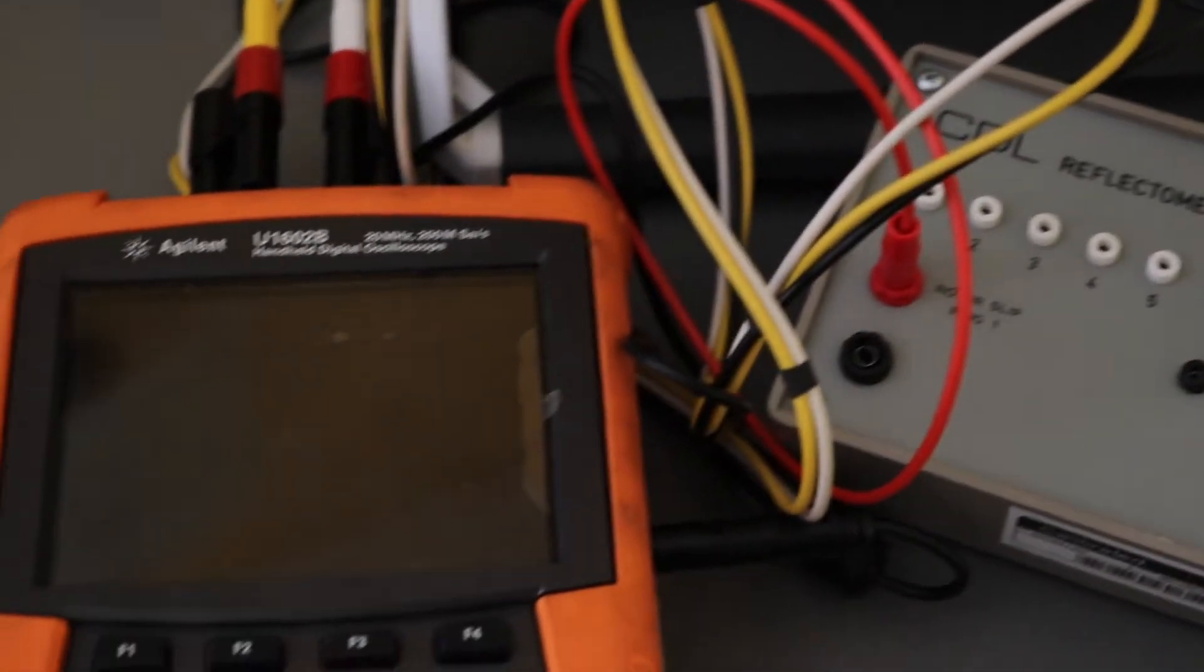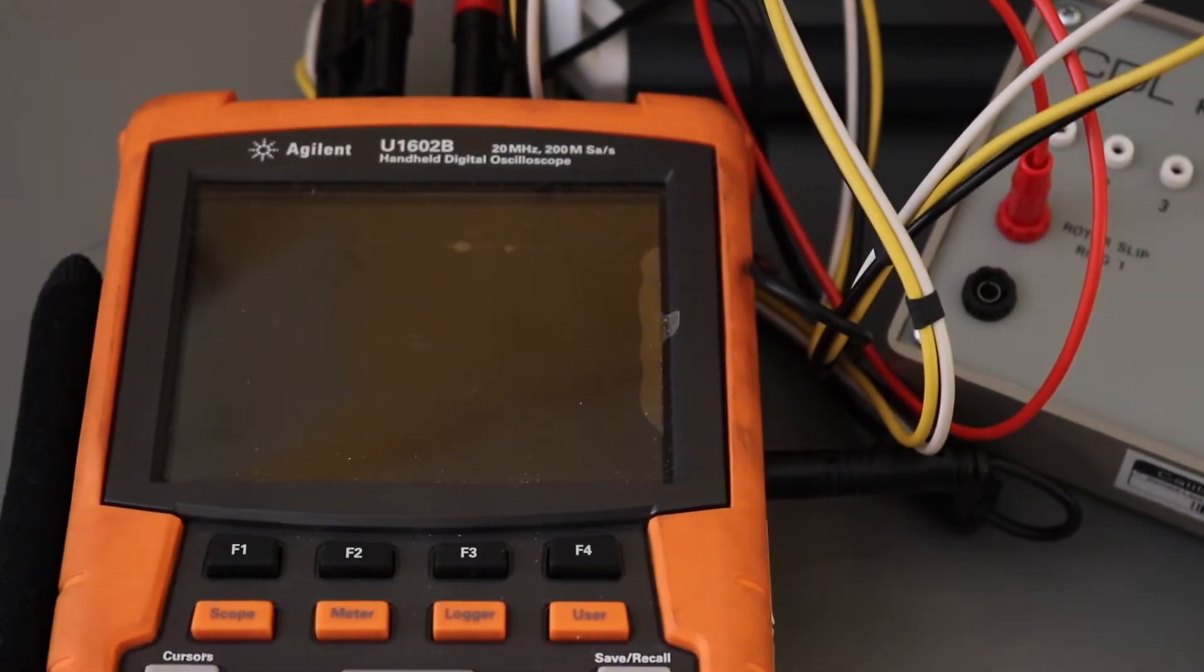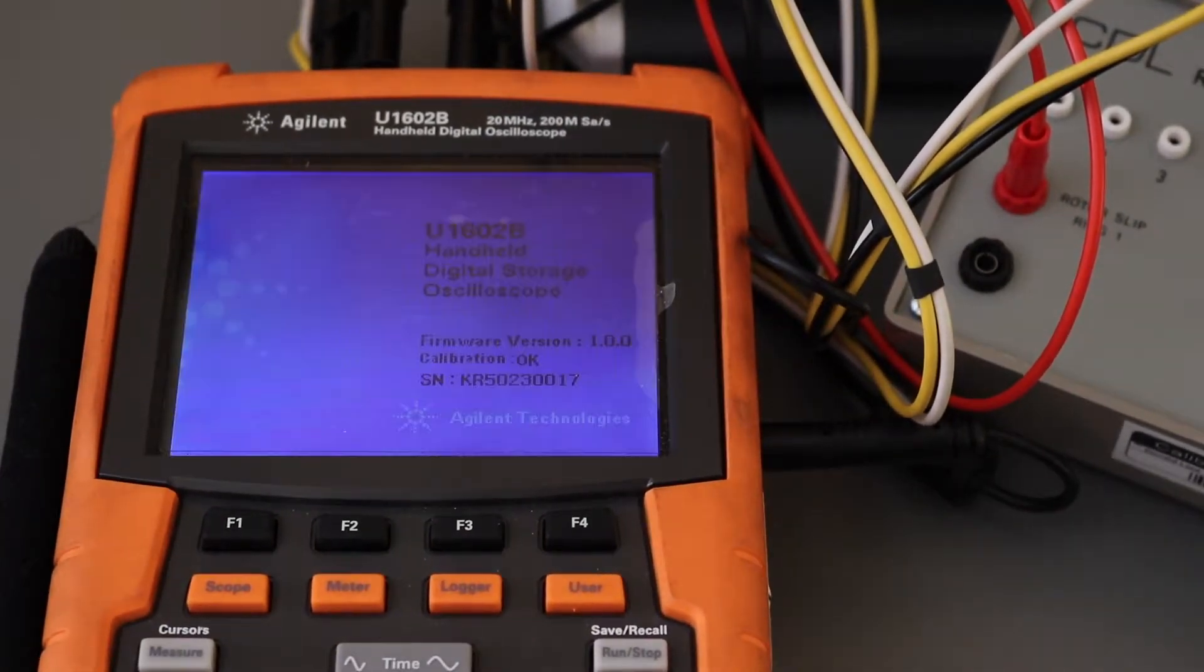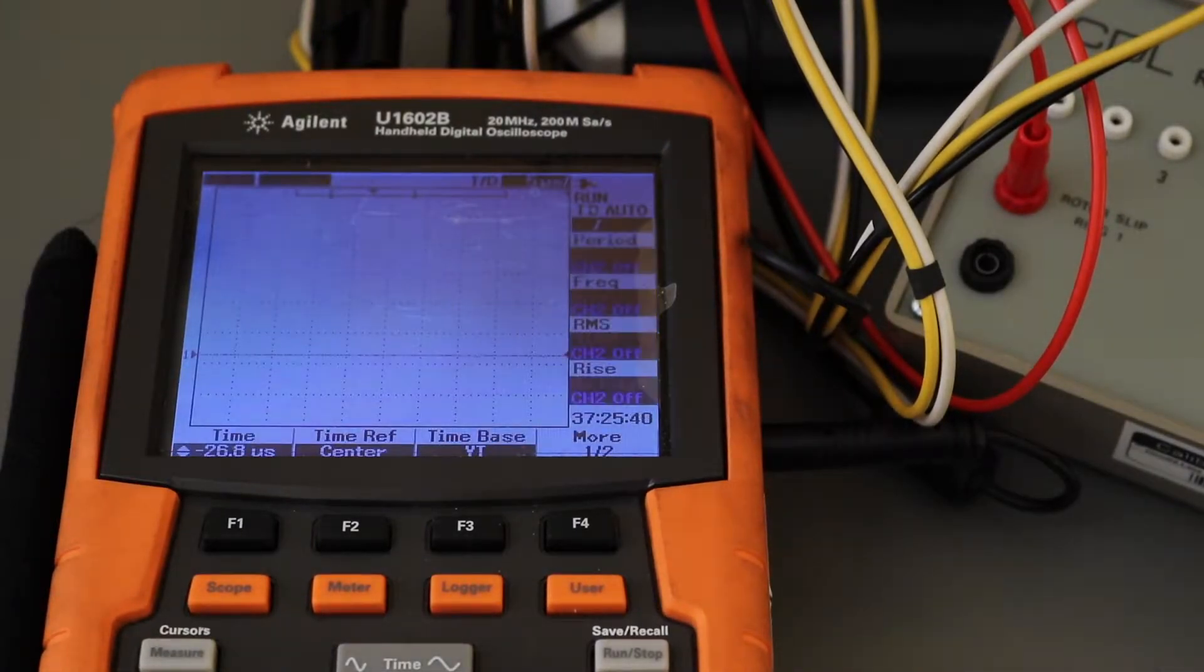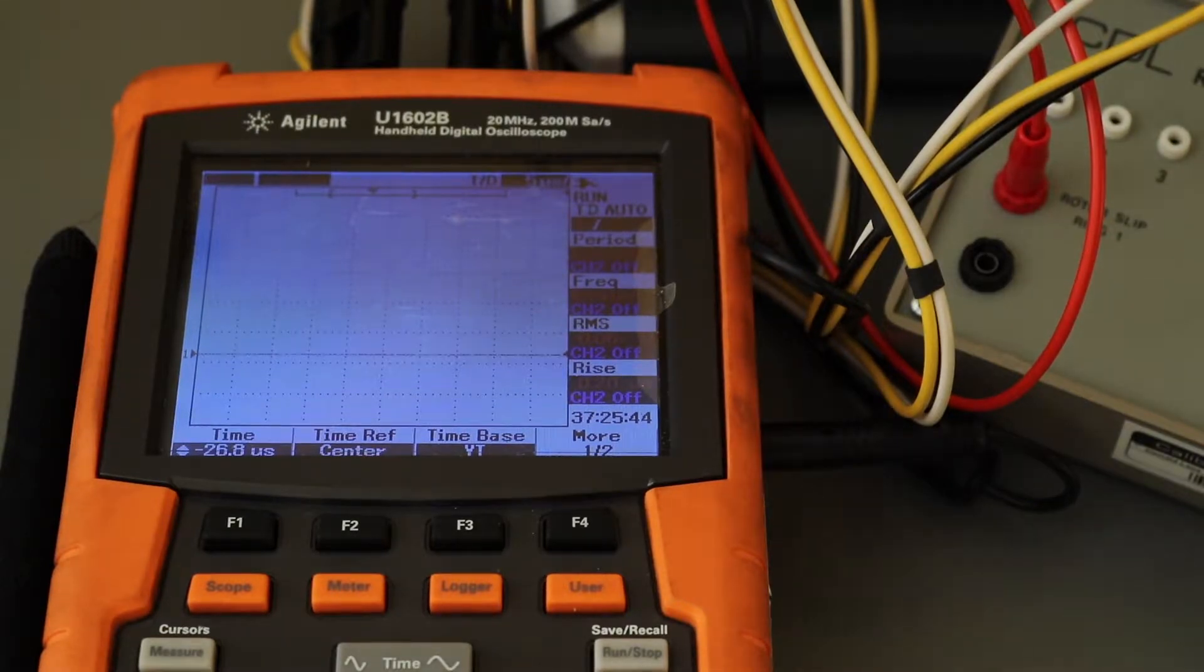And obviously the DSO is just there. Turn on scope now. That's reasonably fast boot up. And we will turn on rotor reflectometer now. So there's the initial signal, let's go around there.